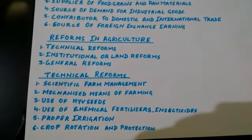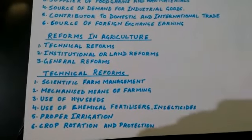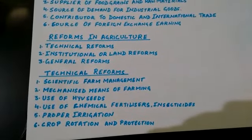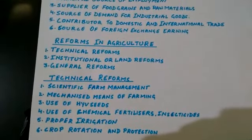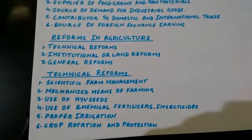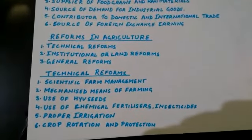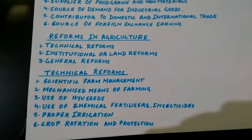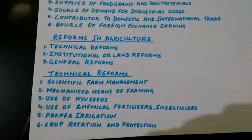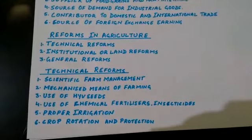Then the use of chemical fertilizers and insecticides, so that the same plant produces more of the product. Next is proper irrigation, crop rotation and production. When all these things are used in a combined way, they give good results, and the result is termed as the green revolution, which gave a good boost to Indian agriculture. We shall know about further reforms in the next lecture. Thank you.